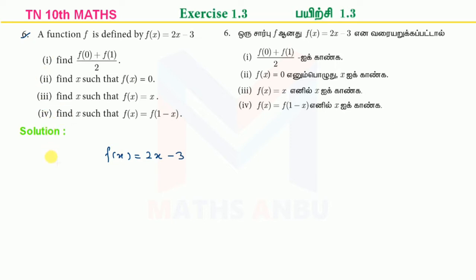We have values. The first question is: f of 0 plus f of 1, divided by 2. So f of 0 is equal to 2 into 0 minus 3, which gives 0 minus 3, equal to minus 3.